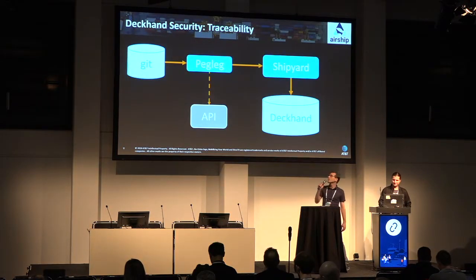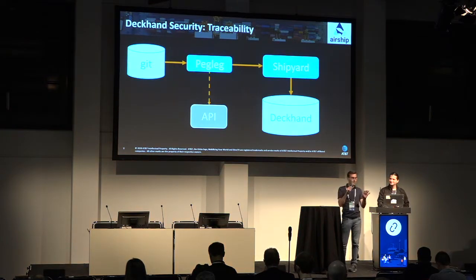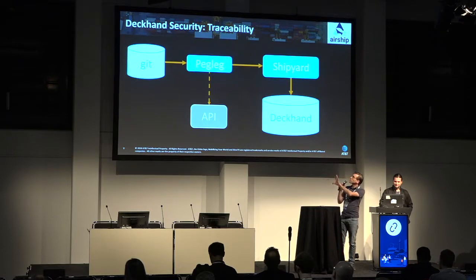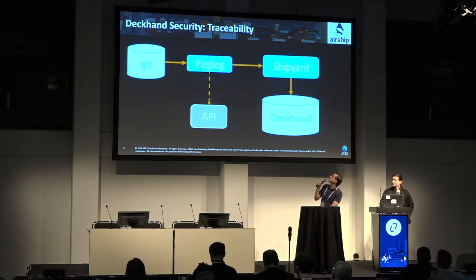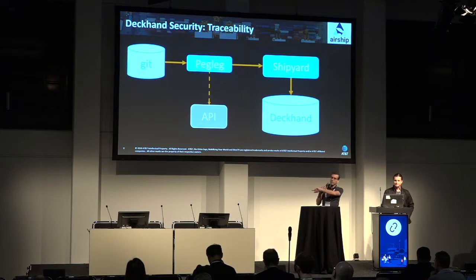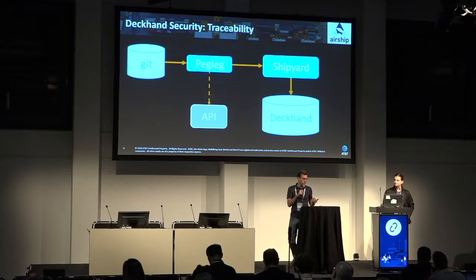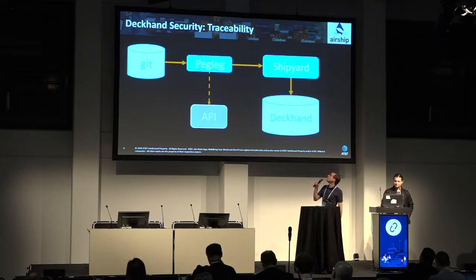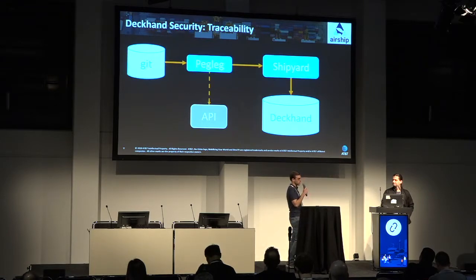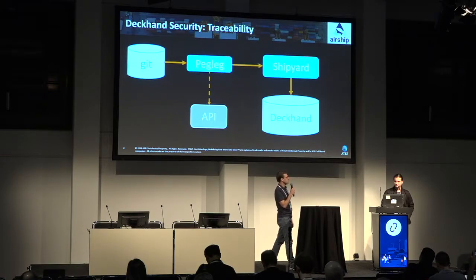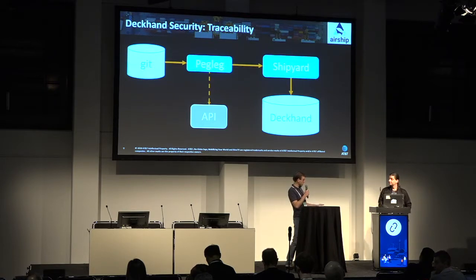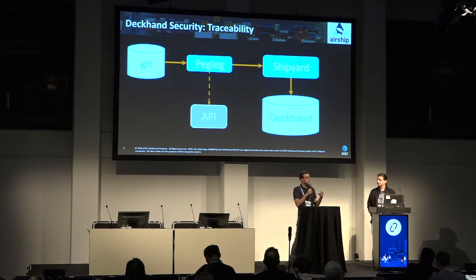Traceability: declarative is great and we can store everything in Git. We have some authoring tooling in Pegleg that is before you get to the site, gathering up all the configuration from various Git repos. You could easily imagine it querying something for certificate data or other sensitive data from a vault API. It feeds those into Shipyard where they go into Deckhand to be stored and locked down in Barbican for secret data, then queried by all the components in the site. Deckhand tracks what was delivered, and Shipyard will annotate the revisions so you know what was deployed — giving you traceability on site.